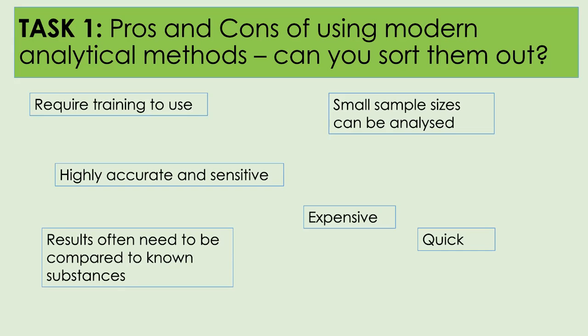For your first task, there are six statements — some are advantages and some are disadvantages, pros and cons if you prefer, of using modern analytical methods. Sort them into two columns in your notes: advantages in one column and disadvantages in the other.